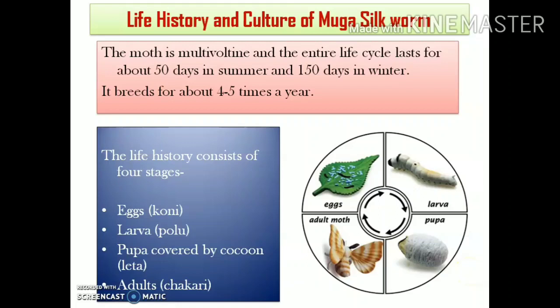Now let us study about the life cycle and culture of the Muga silkworms. These moths are multivoltine in character, meaning they have two or more generations or broods per year. The Muga silkworms are multivoltine and generally breed about 4 to 5 times per year.